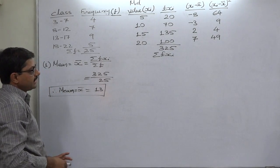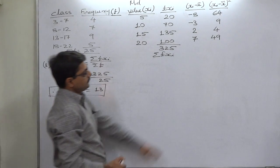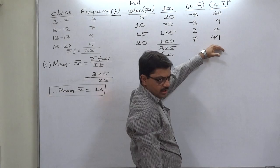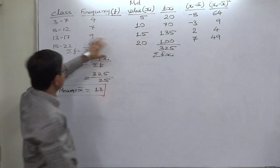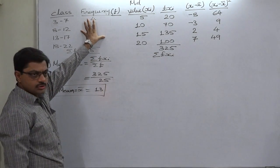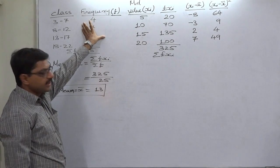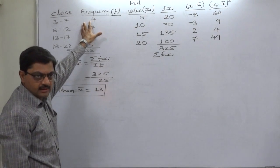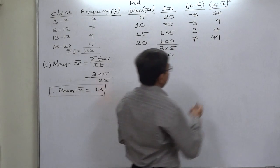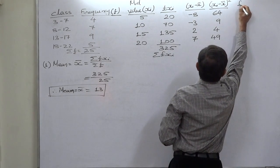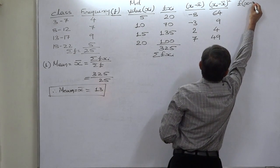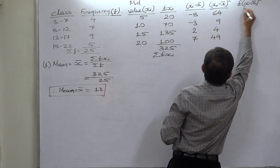In case of ordinary data, we need the summation of this column, sigma x minus x bar whole square. But this is a case of frequency distribution, so we must consider the frequency as a weight of the variable. So now the last column is f into x minus x bar the whole square.